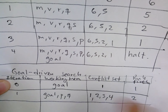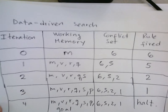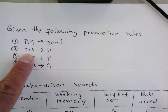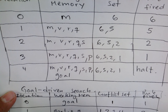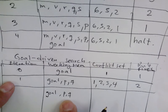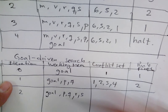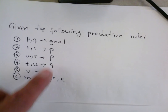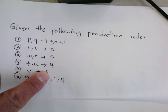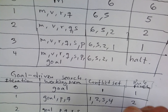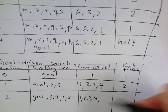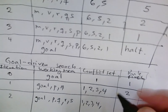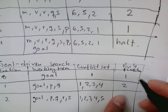The next rule to fire is rule two. When we execute rule two we add R and S, so now we have goal, P, Q, R, and S. We then look for what this matches on the right-hand side of the productions. Without S we had rules one, two, three, four. Adding S, the only rule that has S is rule five, so we add five to the conflict set.